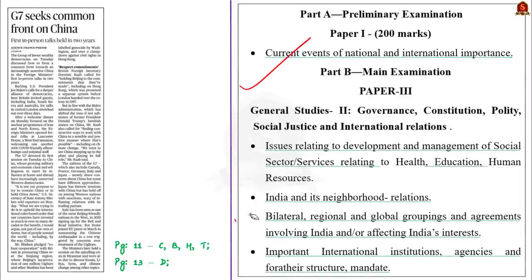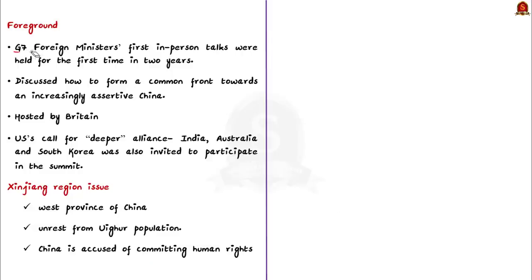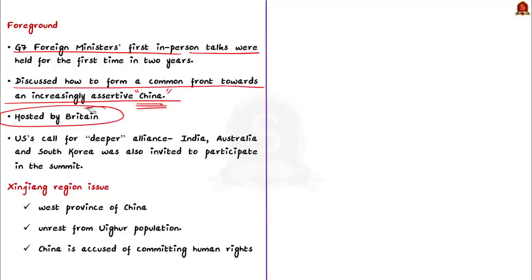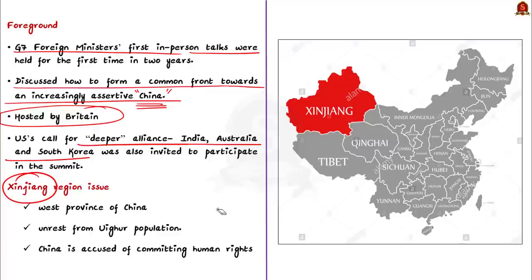Now let us discuss G7. G7 foreign ministers held their first in-person talks in two years, discussing how to form a common front against an increasingly assertive China. The meet was hosted by Britain, which holds the G7 presidency this year; India, Australia, and South Korea were also invited. The G7 pushed for robust cooperation in pressuring China over the Xinjiang region, where China is accused of human rights violations against the Uyghur population.